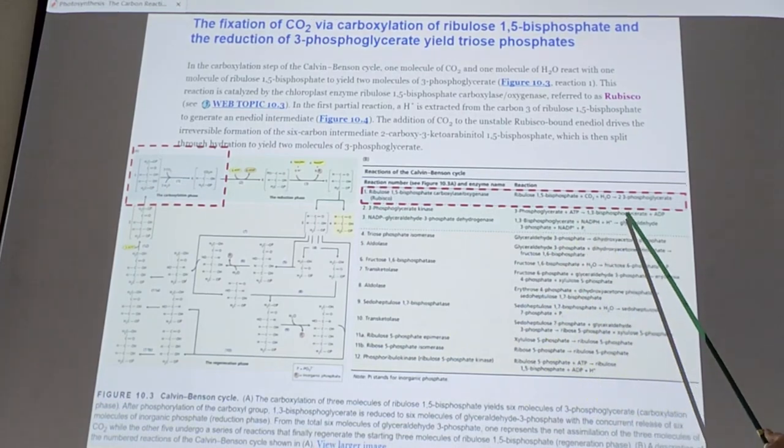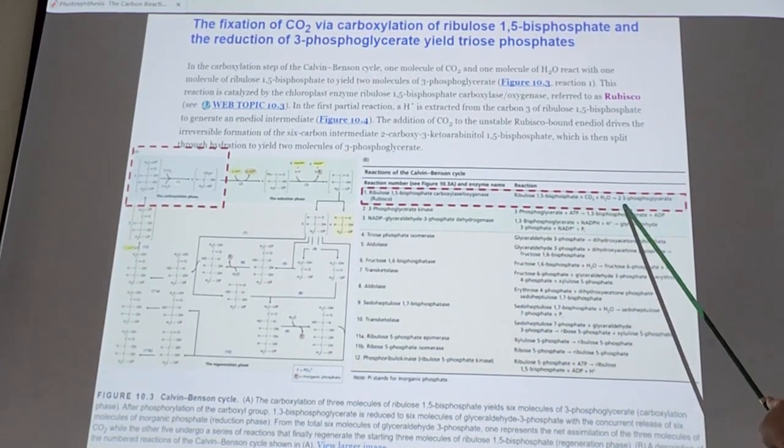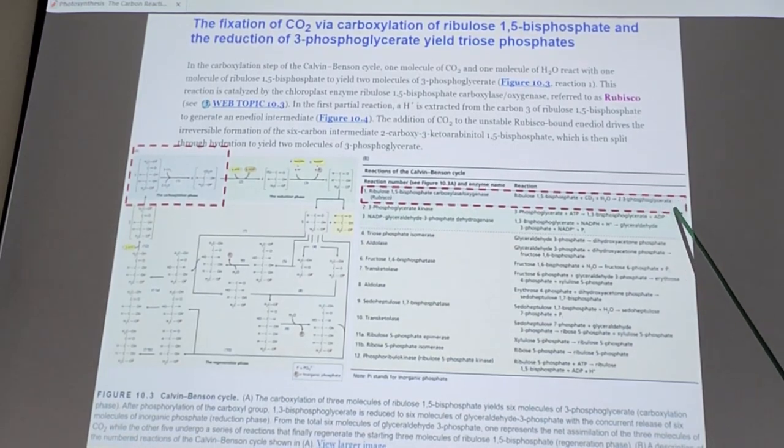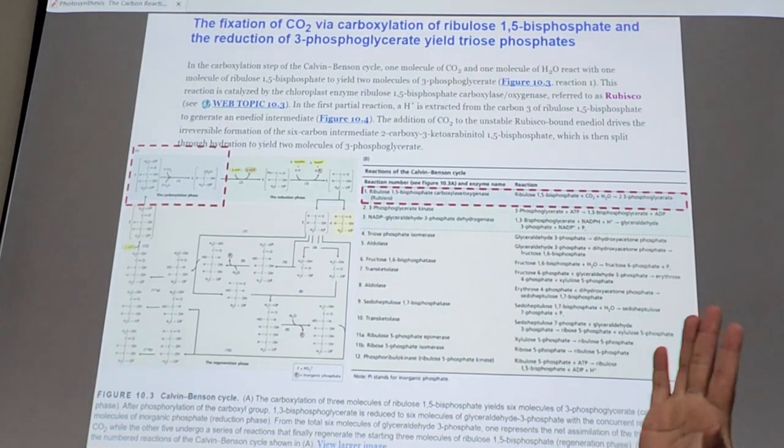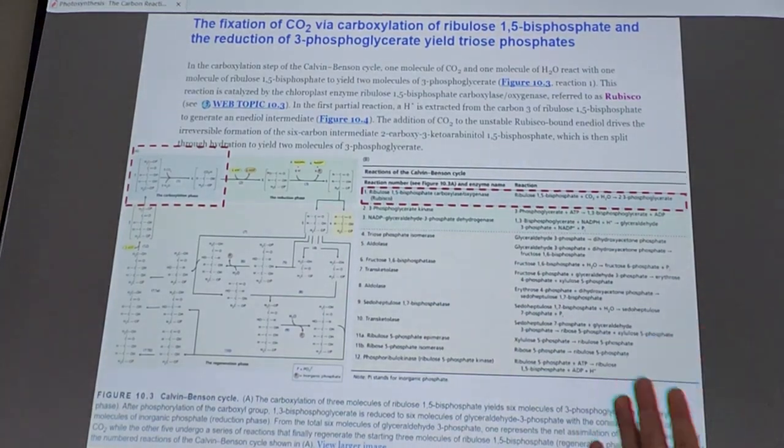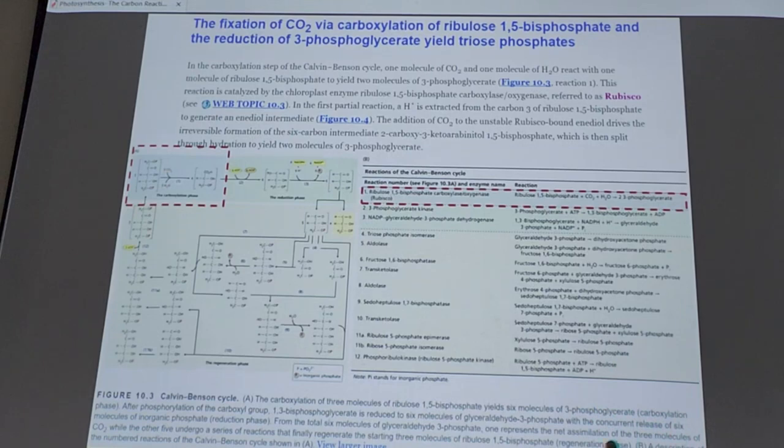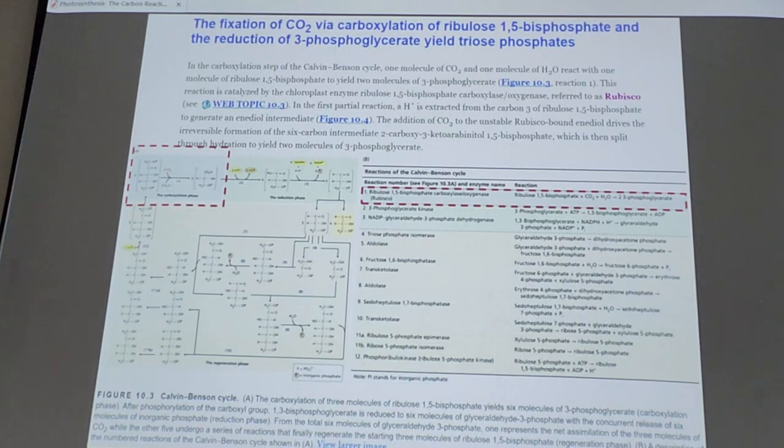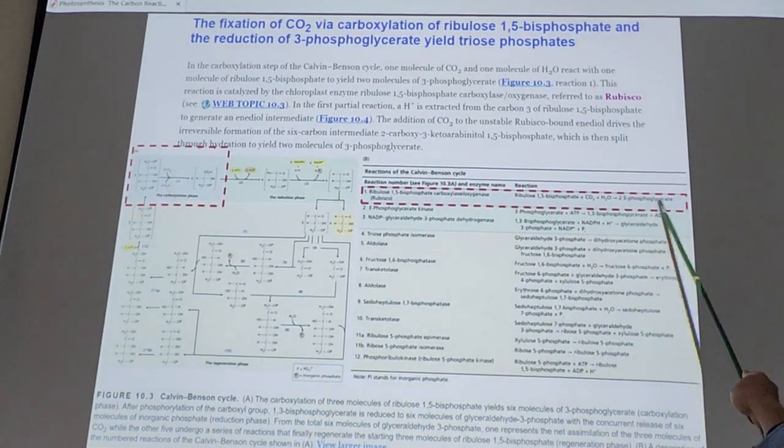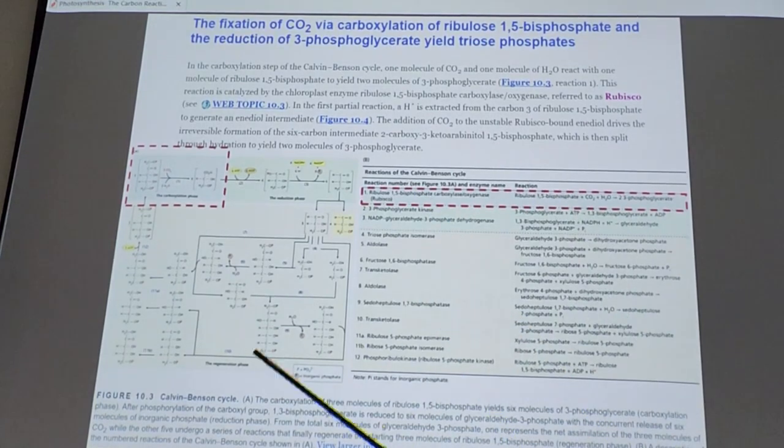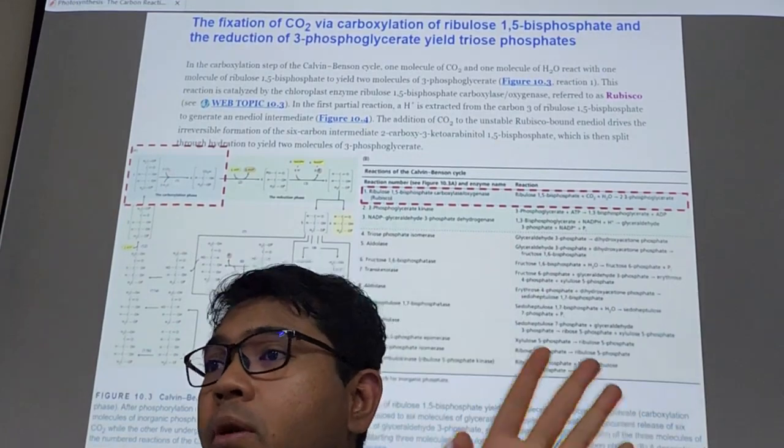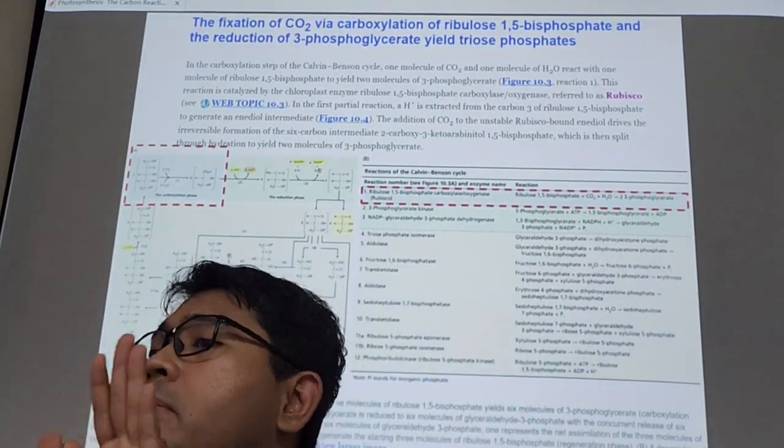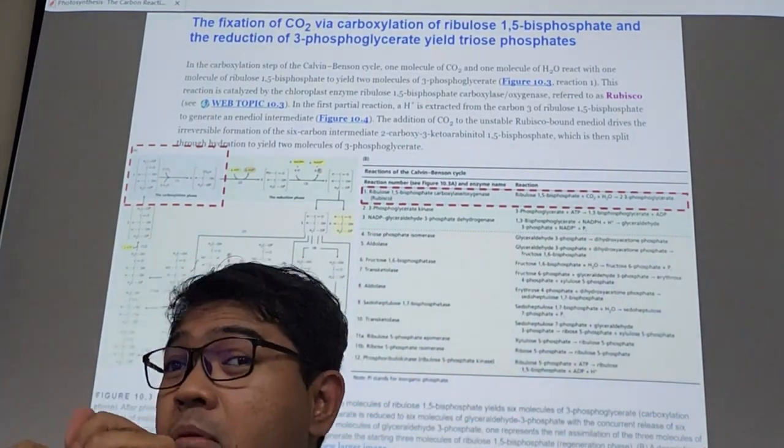So the product of this is you get two molecules of phosphoglycerate. Actually it was originally one molecule, but this molecule scientists omit because it's very unstable. Scientists go straight to three-carbon phosphoglycerate. How come? Why two?